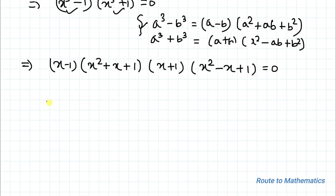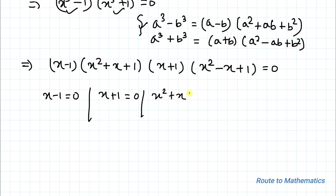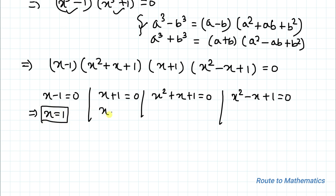In order to satisfy the given equation, we have x minus 1 equals to 0, x plus 1 equals to 0, x squared plus x plus 1 equals to 0, and x squared minus x plus 1 equals to 0. From the first factor we get x equals 1, and from the second we get x equals minus 1. The other two are quadratic equations, so we will apply the quadratic formula to find the remaining values of x.